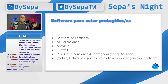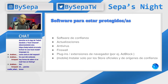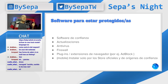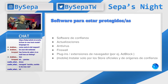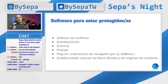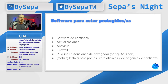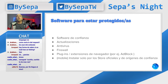Segundo: apliquen las actualizaciones. Ya que tienen software de confianza, actualícenlo para no tener estos problemas. Tercero: instalen antivirus. Si usan Windows, instalen antivirus — ya tienen Windows Defender. Preocúpense en que las definiciones de virus estén actualizadas, lo cual se hace a través de Windows Update. Si usan macOS o Linux, pueden instalar ClamAV, que es un antivirus gratis.